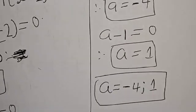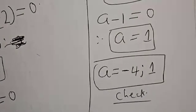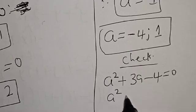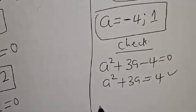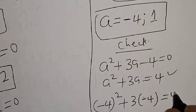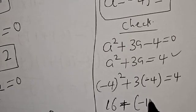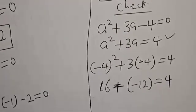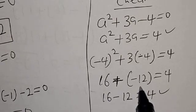That is the final answer. You can also check to confirm if your answer is right or wrong. At a equals minus 4 and 1, let's check. We have a squared plus 3a equals 4. At a equals minus 4: minus 4 squared is 16, plus 3 times minus 4 is minus 12. So 16 minus 12 equals 4. We satisfy the given equation at a equals minus 4.